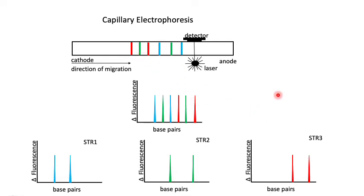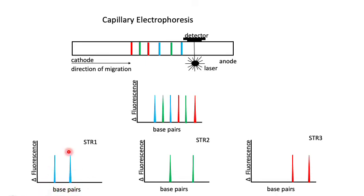The genetic analyzer separates bands based on their fluorophore, and in the binned analysis we can see two peaks for STR1, two peaks of different sizes for STR2, and two peaks of different sizes for STR3.